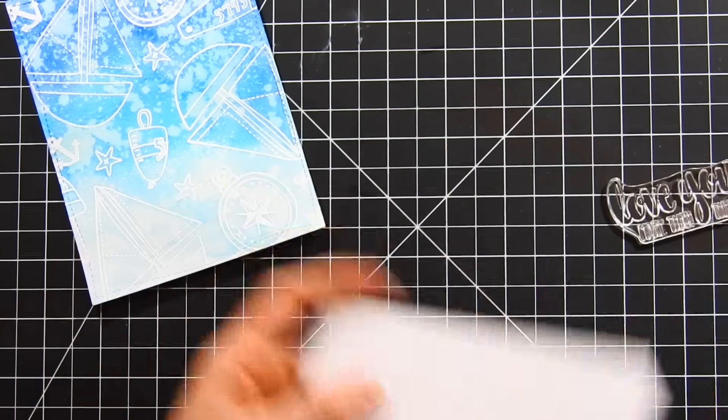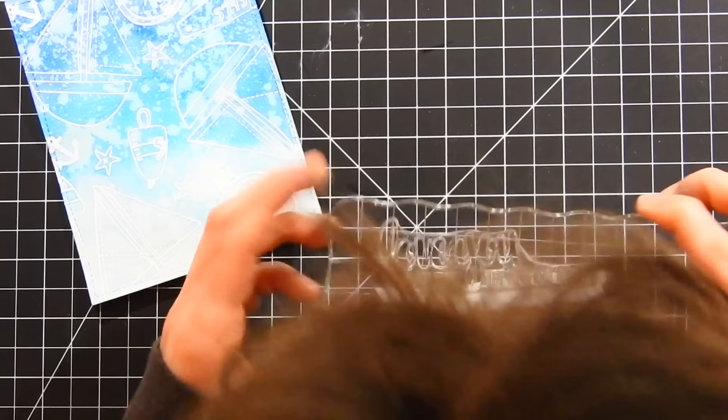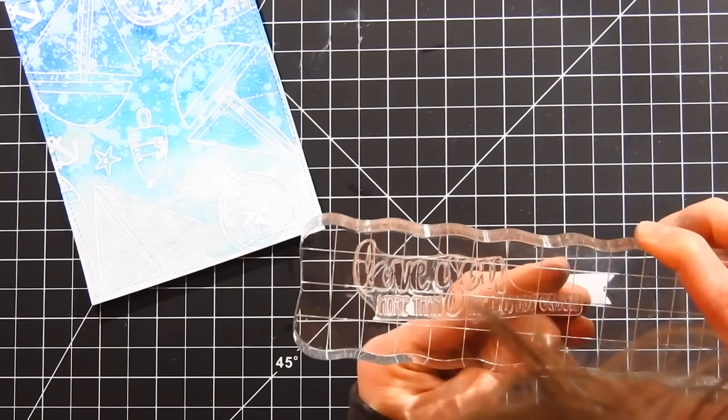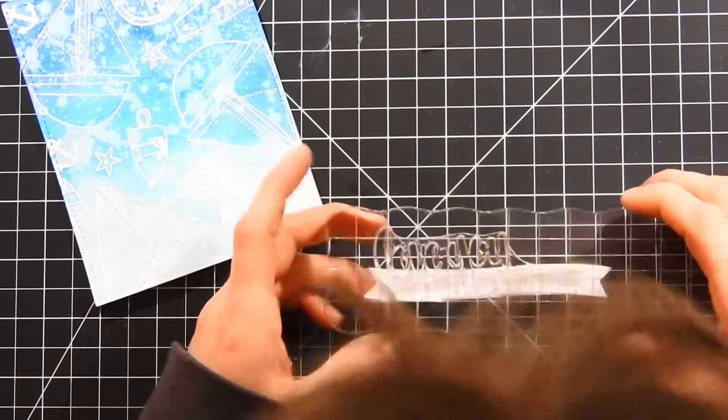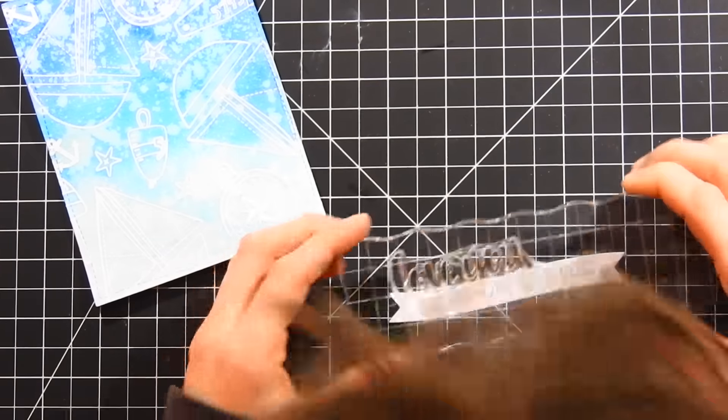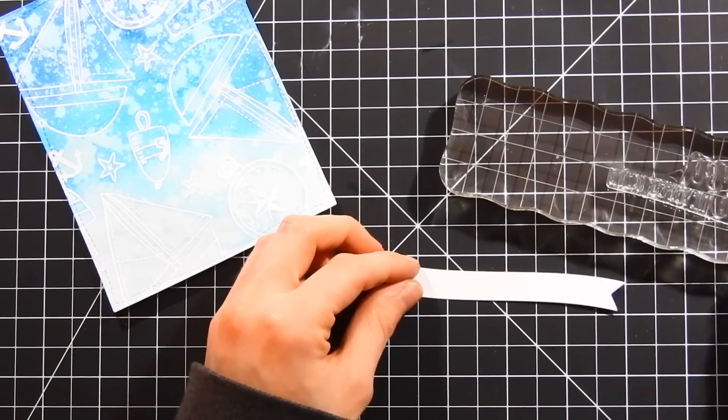All right, so I'm going to take my sentiment banner—this is another design I've created for Whimsy Stamps. I'm going to cut it from white cardstock and I'm going to start warping this sentiment, which is from the Ocean Journey sentiment set. I want to make sure it fits along the shape of this banner, so just by warping the sentiment just a smidgen, I can go ahead and stamp this down onto the banner and it'll flow with the shape much more nicely.